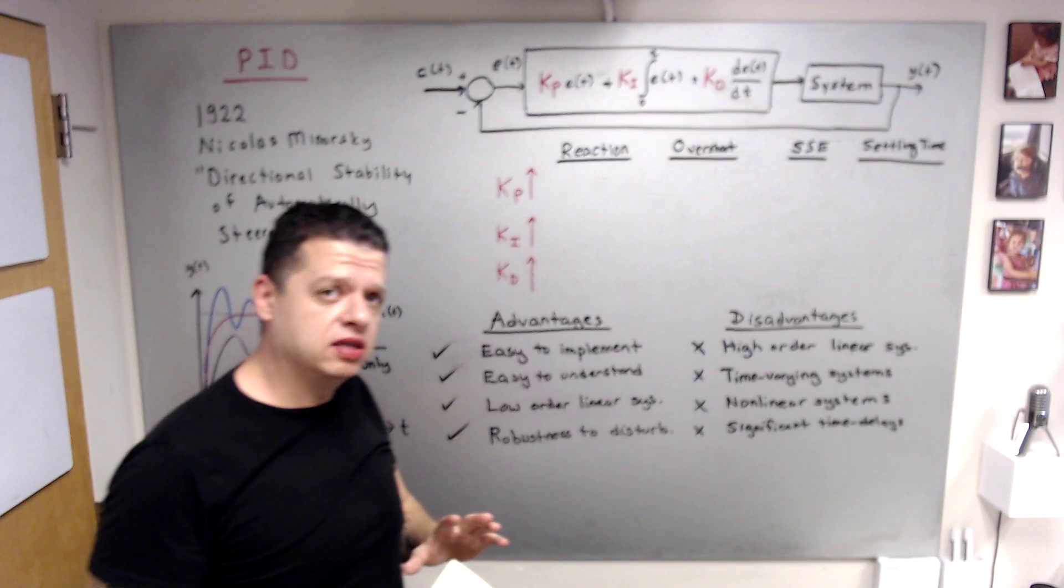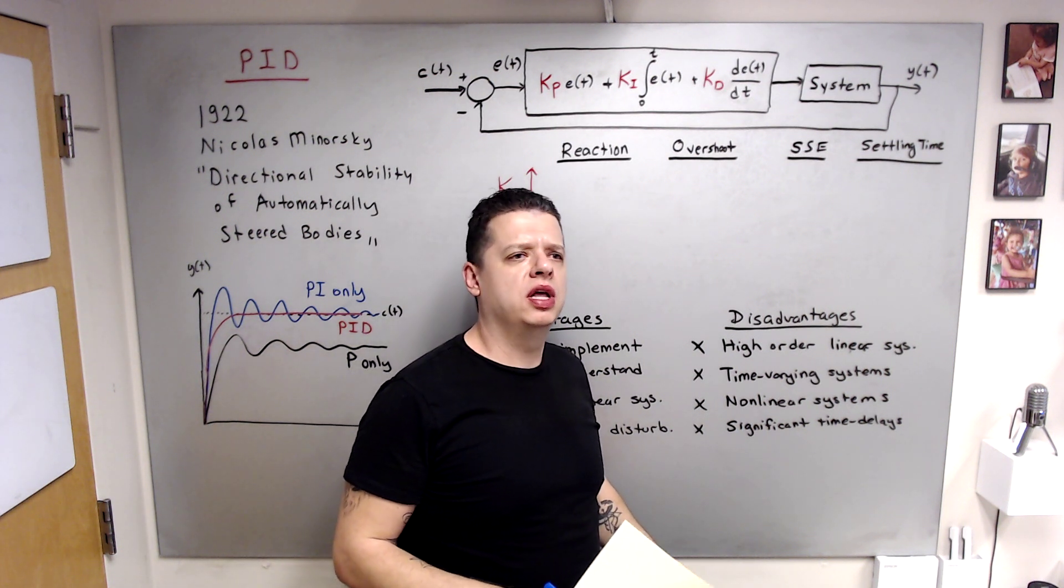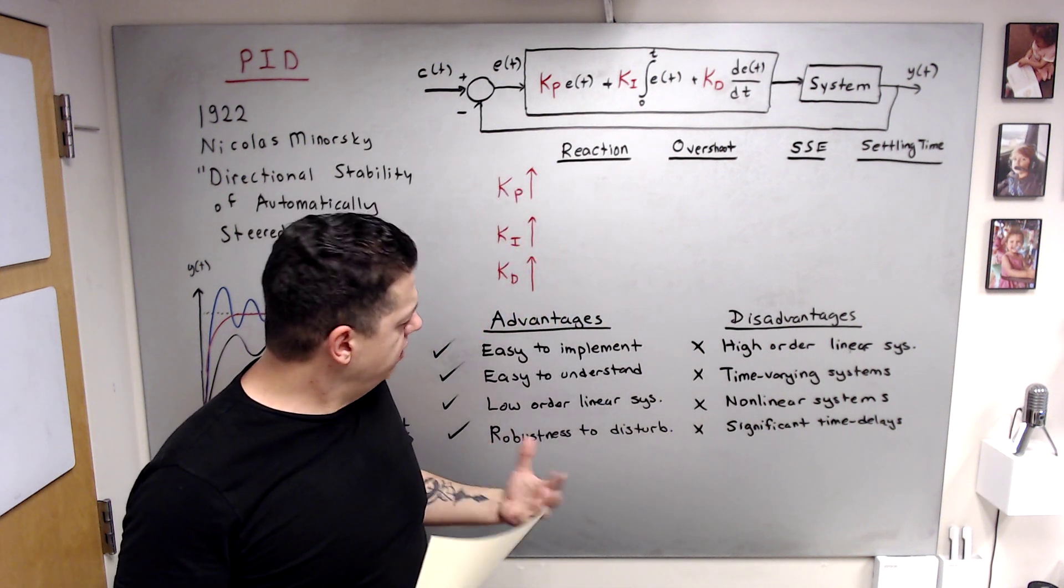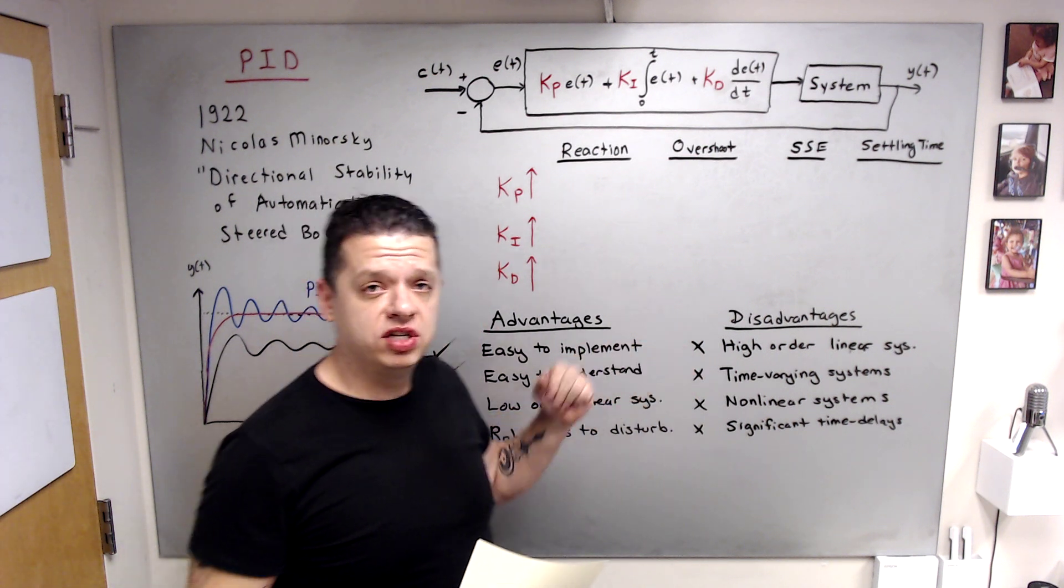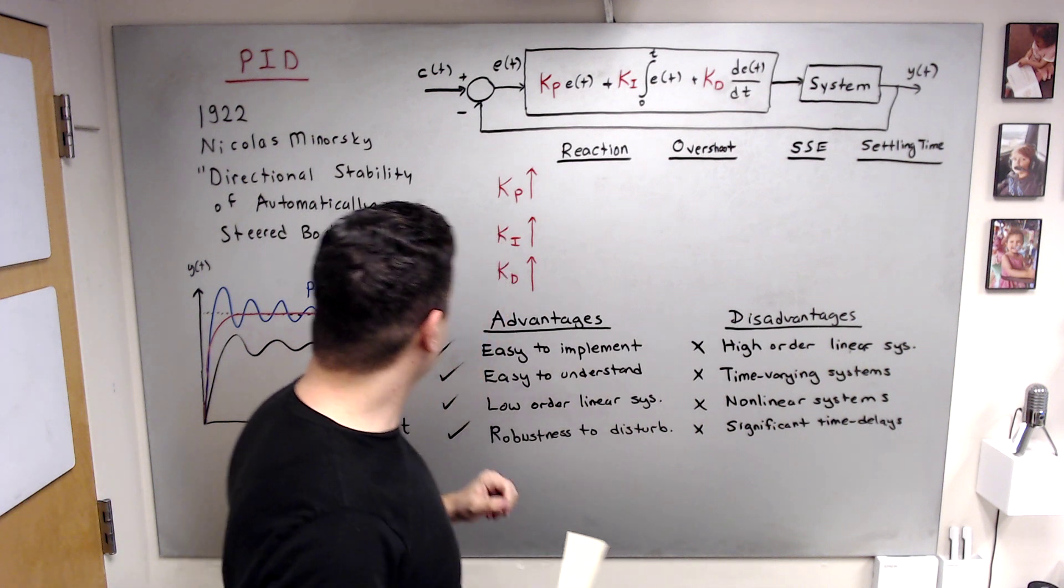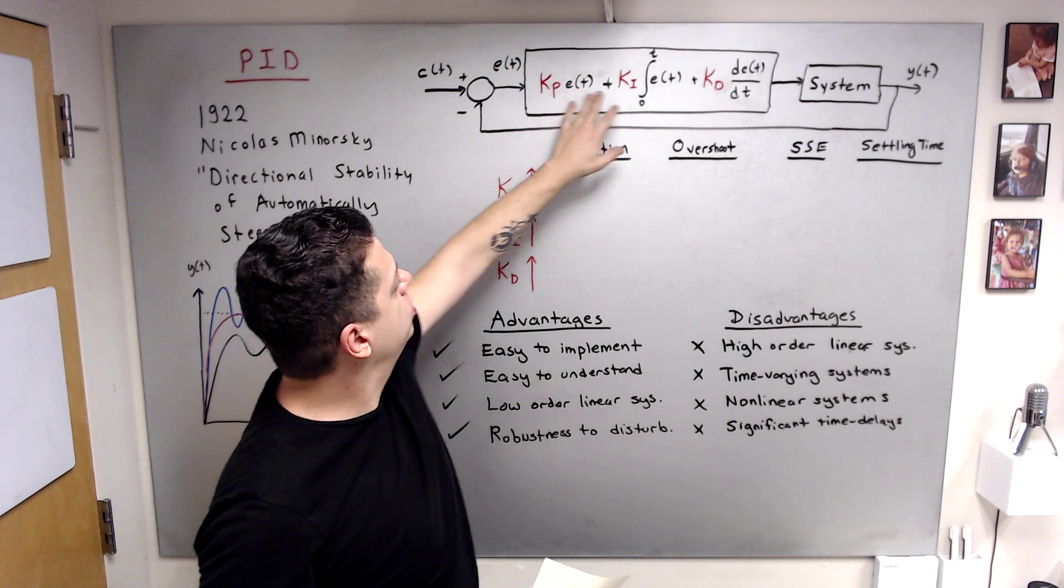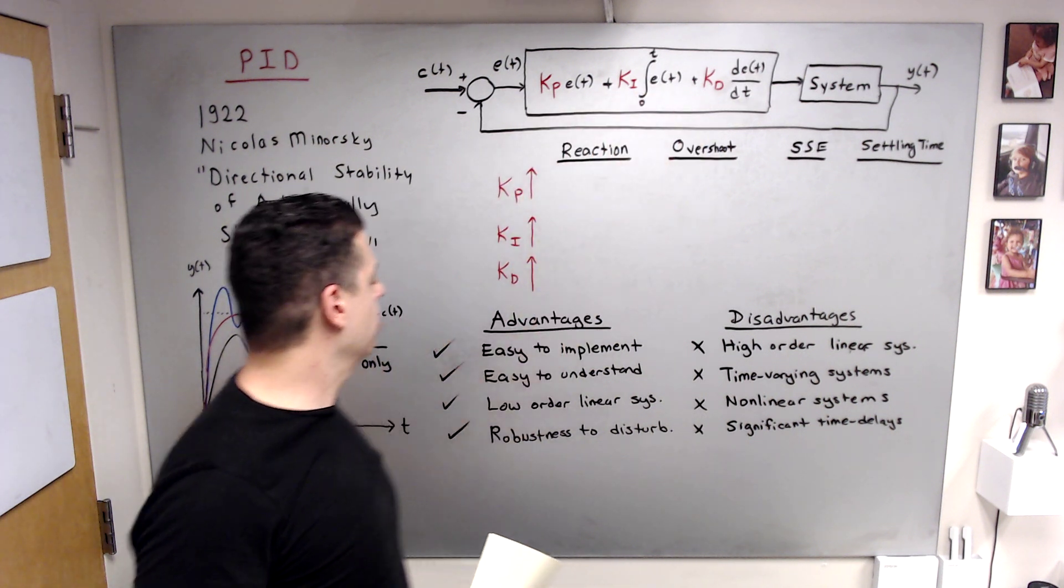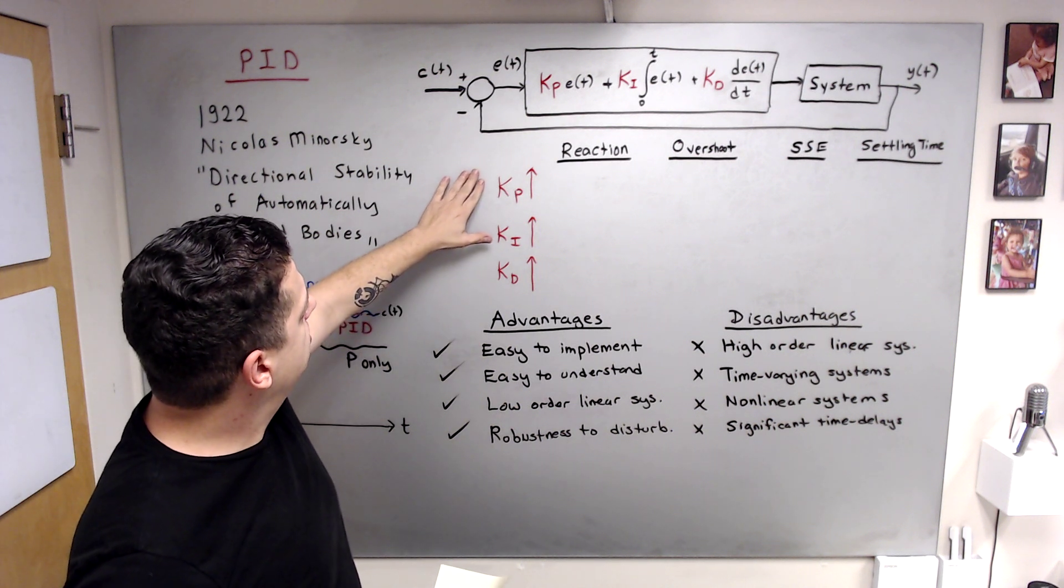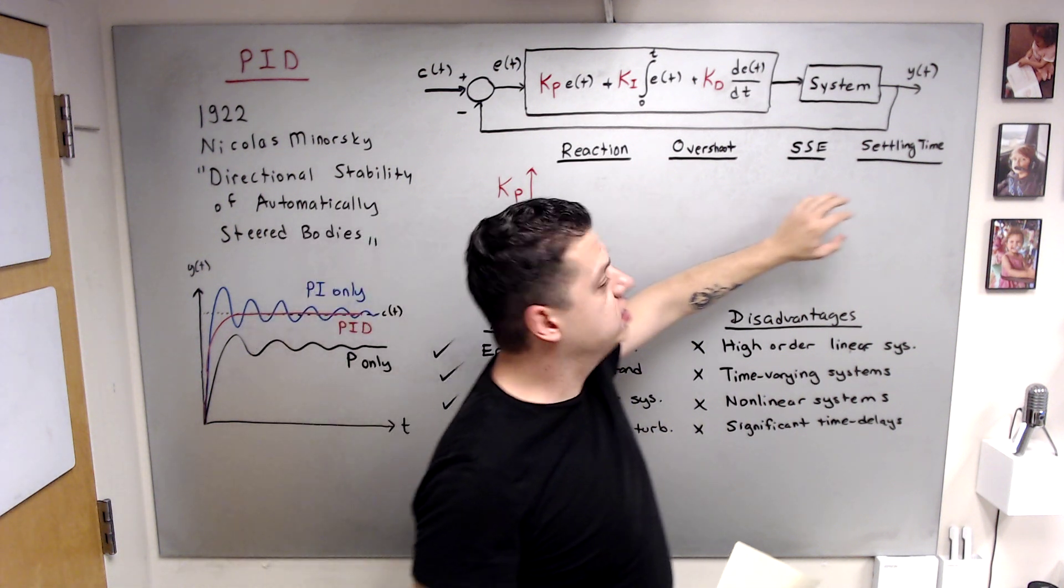Before I start, I know PID is popular, especially we teach it at the undergraduate level, and we should understand advantages and disadvantages of this controller. When we should use it, when should we avoid it? First of all, it is easy to implement. It has just three parameters, you need to choose three gains and implement. Easy to understand.